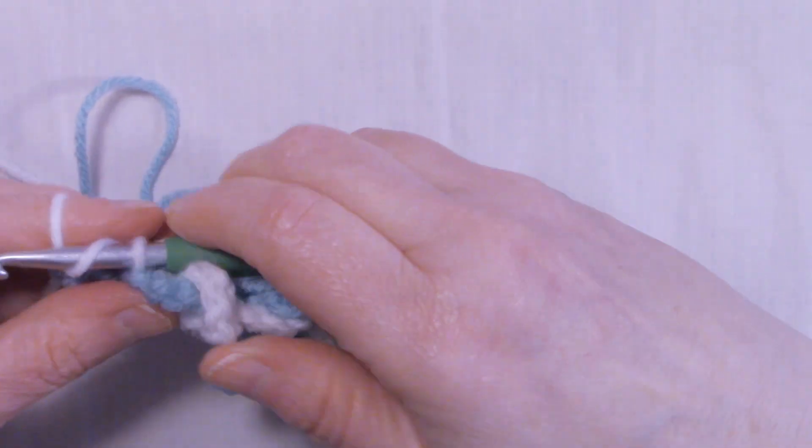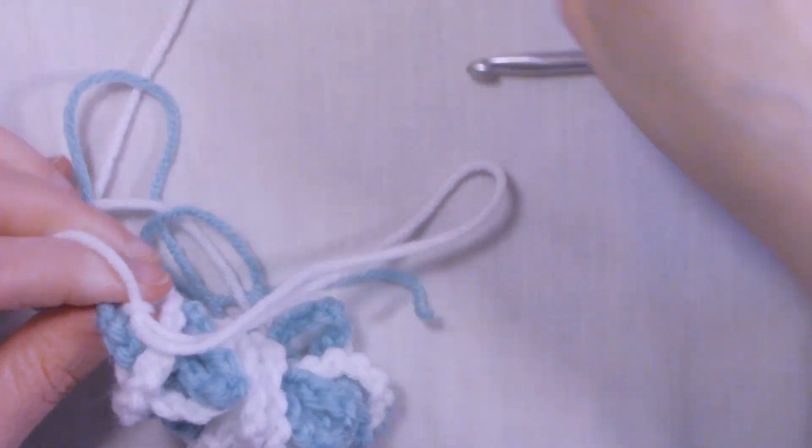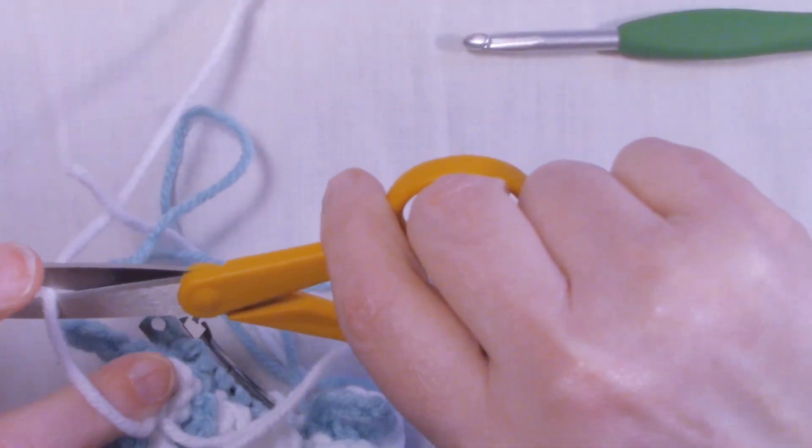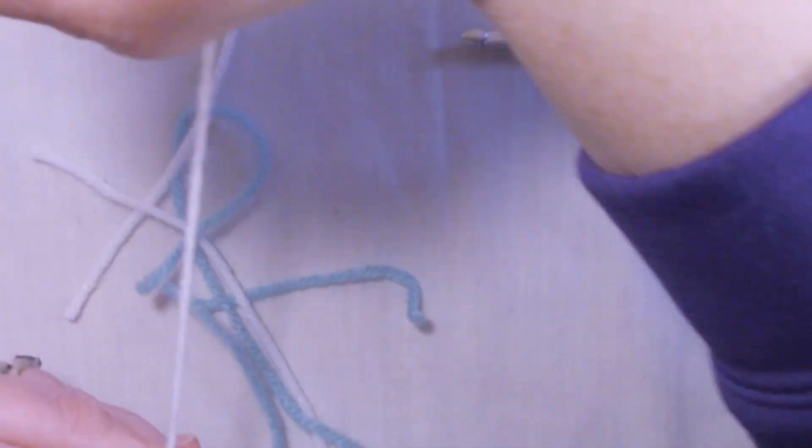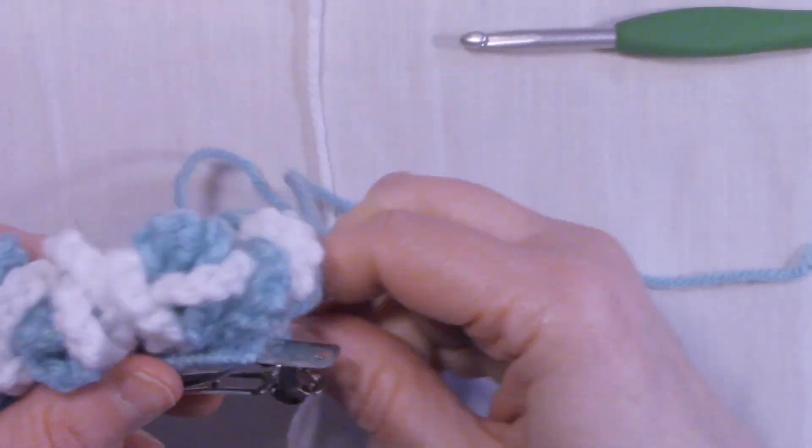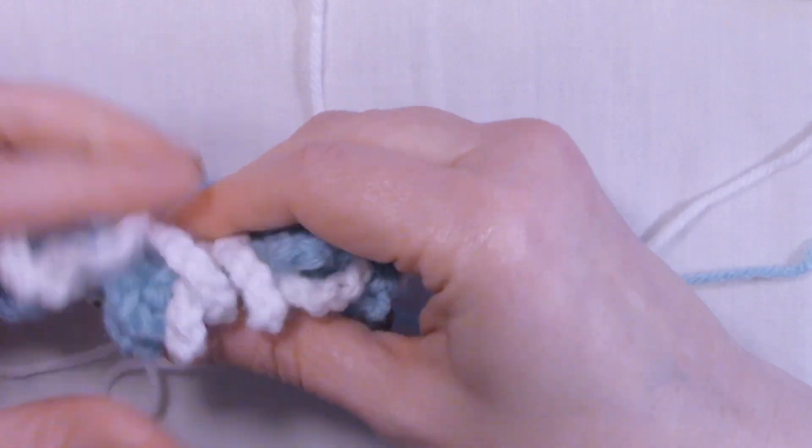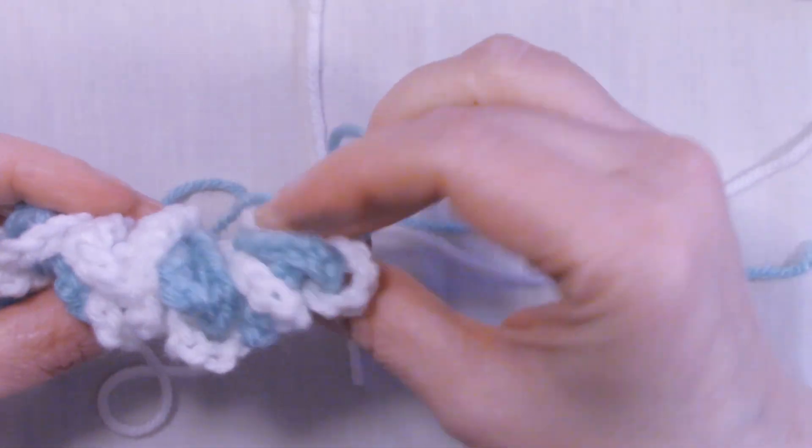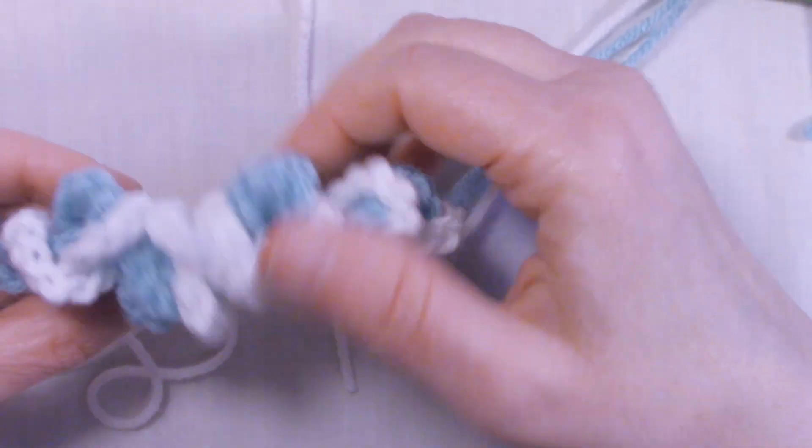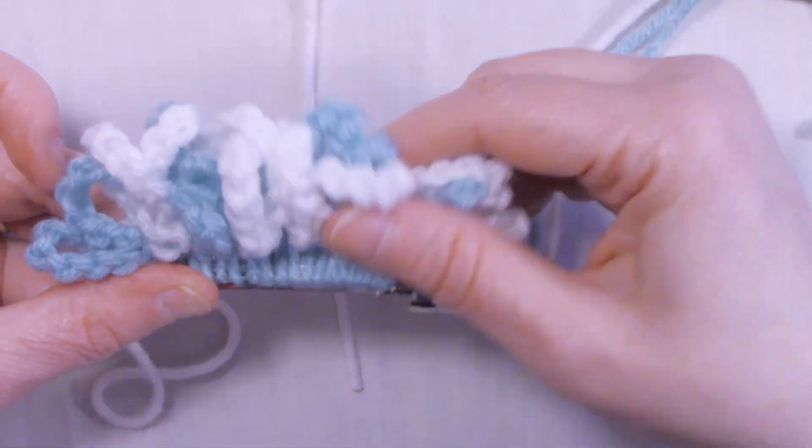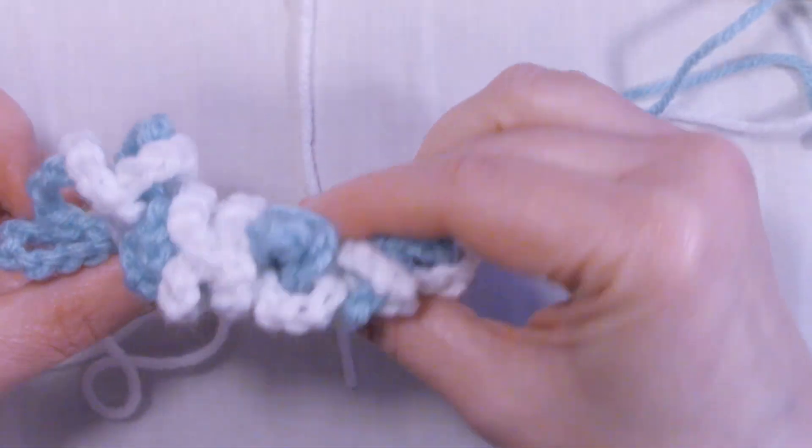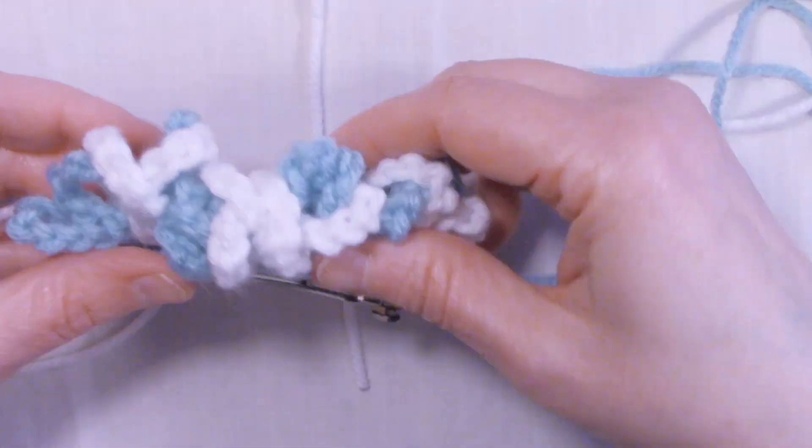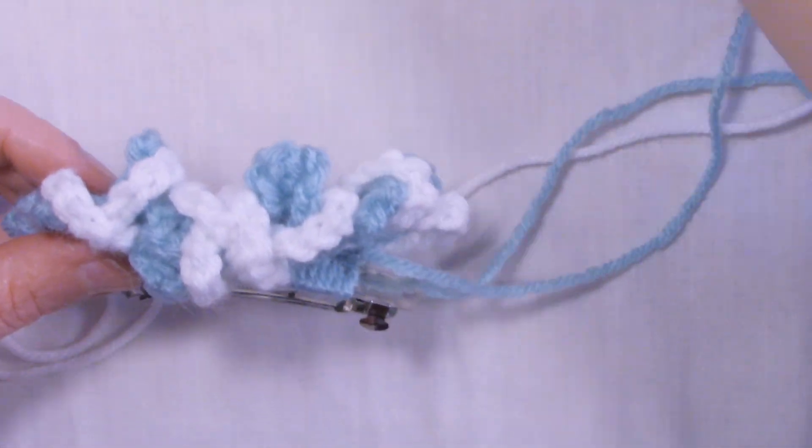I'm at the end of the row and I'm going to fasten off. Now all we have to do is just weave in these ends and our barrette is all finished. So I'll let you go ahead and weave those ends in on your own. And our barrette is all done.